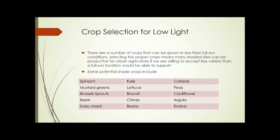This chart shows some crops that can be grown in lower light conditions, including spinach, kale, collard greens, mustard greens, lettuce, peas, Brussels sprouts, broccoli, cauliflower, beets, chives, arugula, Swiss chard, beans, and endive. There are many potential crops we can grow in less than optimum conditions, so don't let the challenge of finding ideal locations stop you from creating an urban agriculture project.